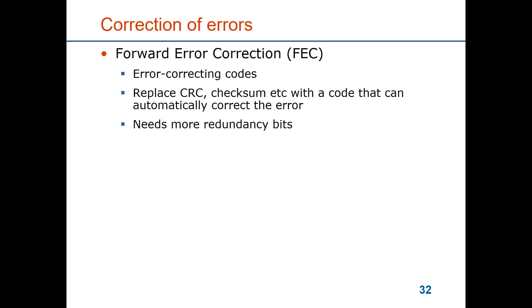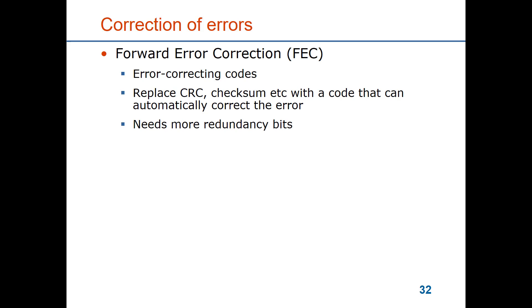There are two principal ideas for handling errors. One is called forward error correction. It means that you use some type of error correcting codes that can help you to identify where the bit errors are located. Because if you know where a bit error has occurred, you simply flip that bit. It's the location of the errors that is important for the code. It would be used to replace the CRC with some other redundancy. You need more redundancy to correct the errors in a frame than what you need with the CRC to detect the errors in a frame.